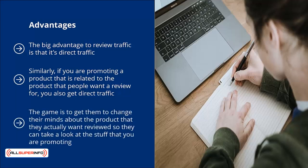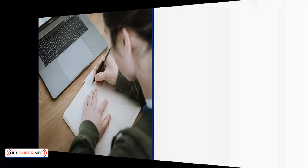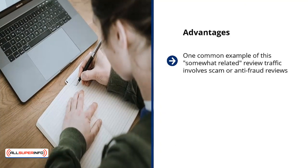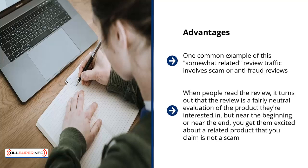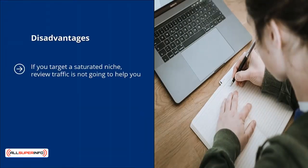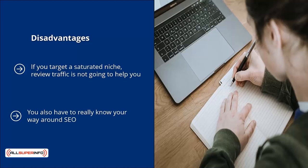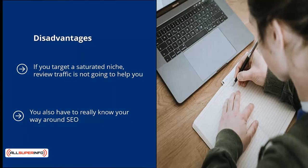The game is to get them to change their minds about the product they wanted reviewed so they look at what you're promoting. A common example is scam or anti-fraud review traffic — you take the product name and add the word 'scam' or 'fraud' with a question mark. The review turns out to be a fairly neutral evaluation, but near the beginning or end you get them excited about a related product you claim is not a scam. This pulls tremendous traffic from search engines. Disadvantages: if you target a saturated niche, review traffic won't help much, and you need strong SEO skills to make it worthwhile.